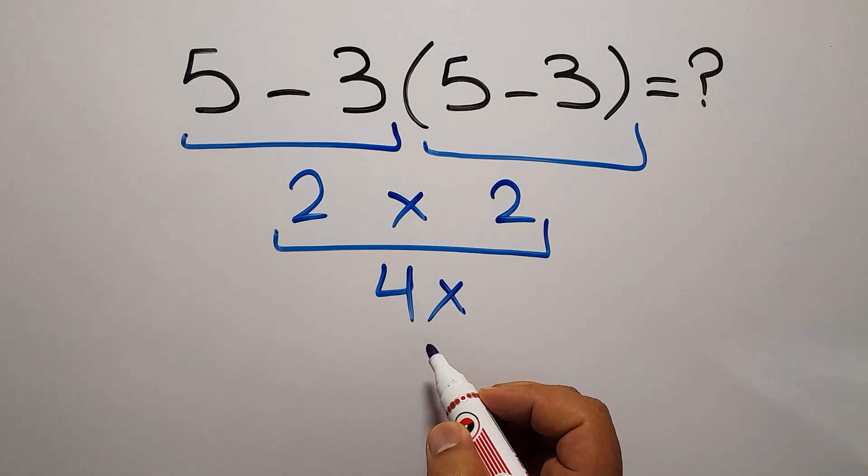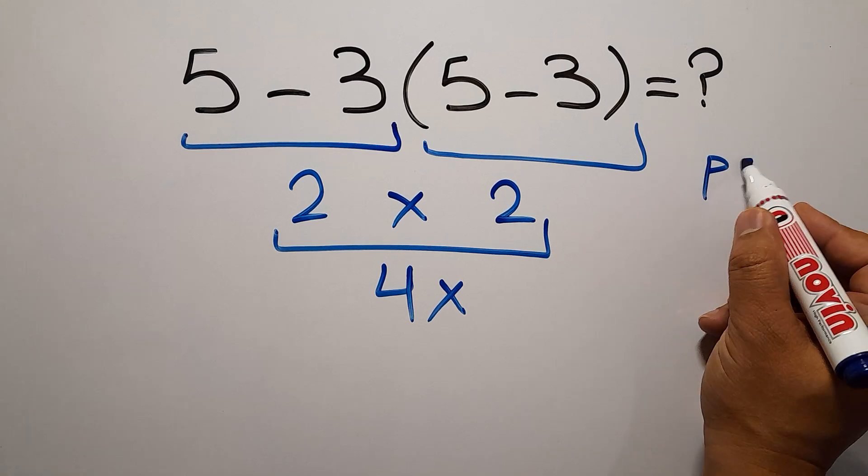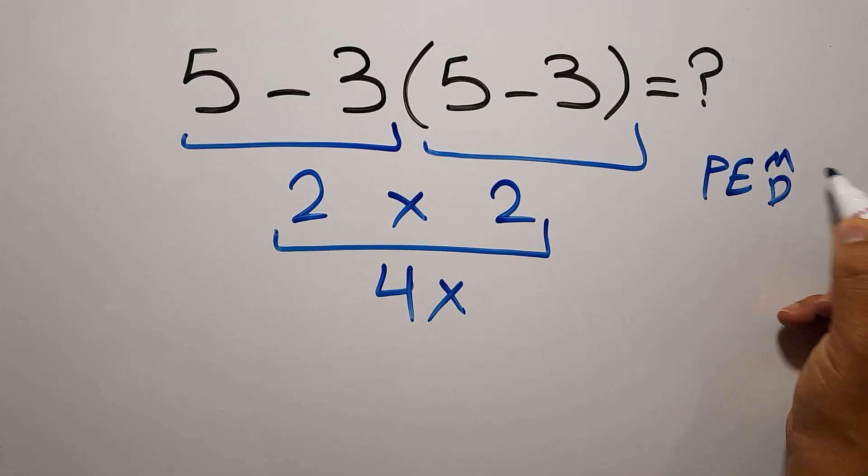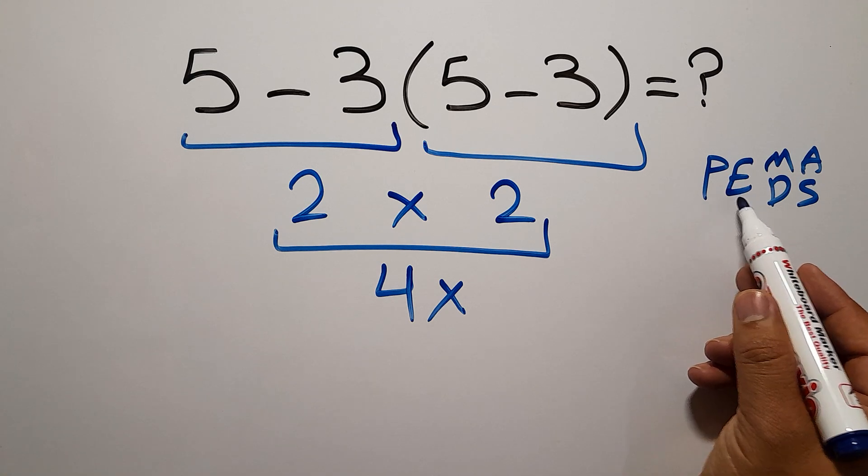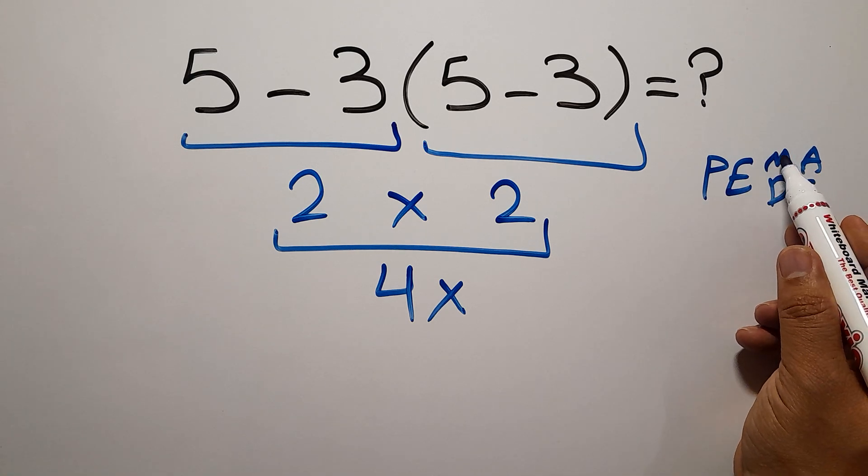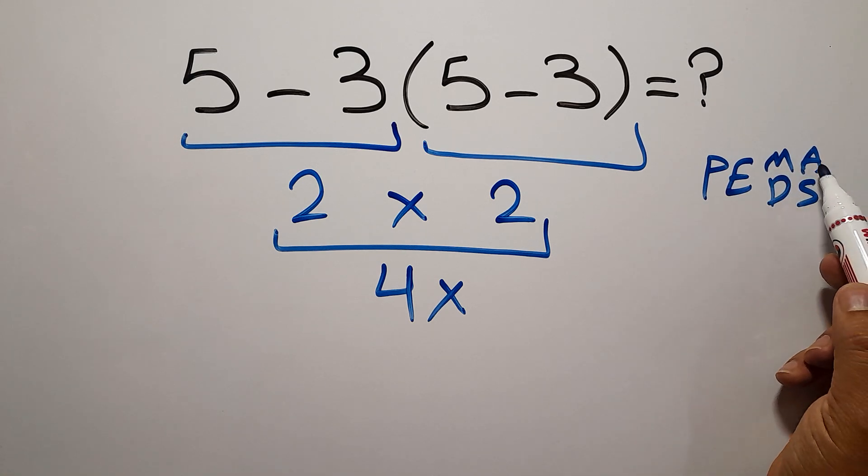But this answer is not correct because according to the order of operations which is PEMDAS. P stands for parentheses, E stands for exponents, M and D stands for multiplication and division and A and S stands for addition and subtraction.